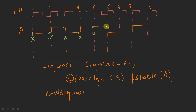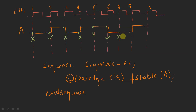At the sixth clock edge, the current evaluation point value is one and the previous evaluation point value is also one, so there is no transition — the value is stable, and the assertion is going to get passed. At the seventh clock edge, the current evaluation point is zero and the previous was one, so it is going to get failed. At the eighth clock edge, the current evaluation point is zero and at the seventh clock edge it was also zero, so there is stability — it is going to get passed.